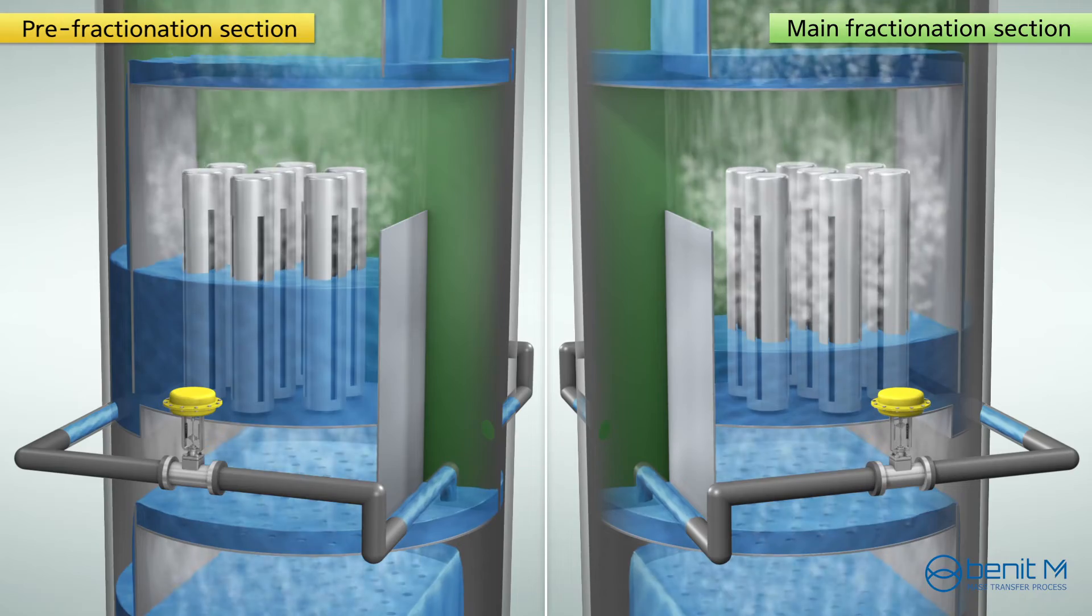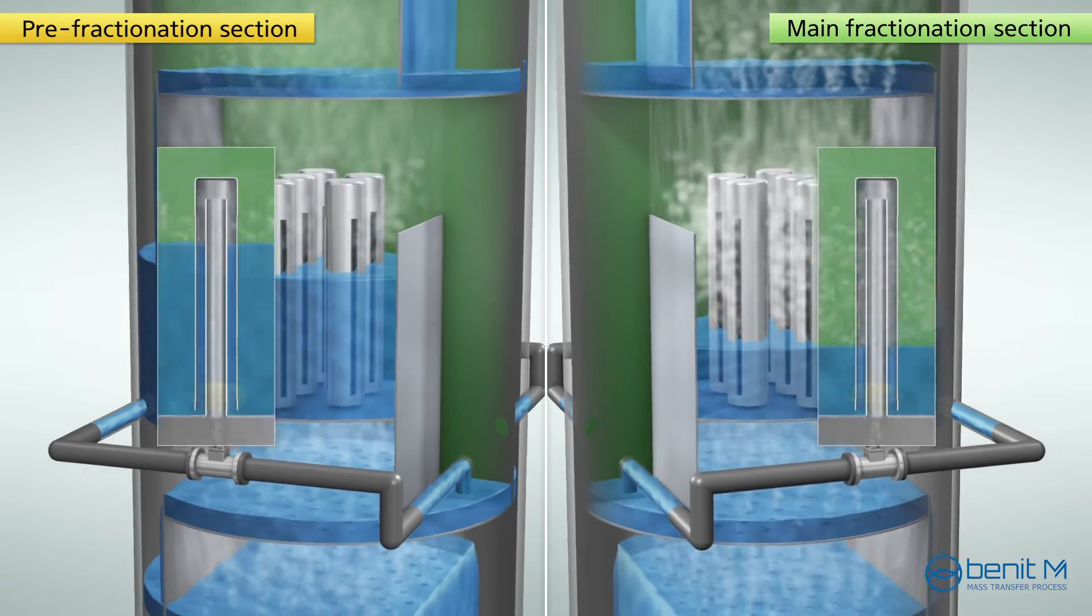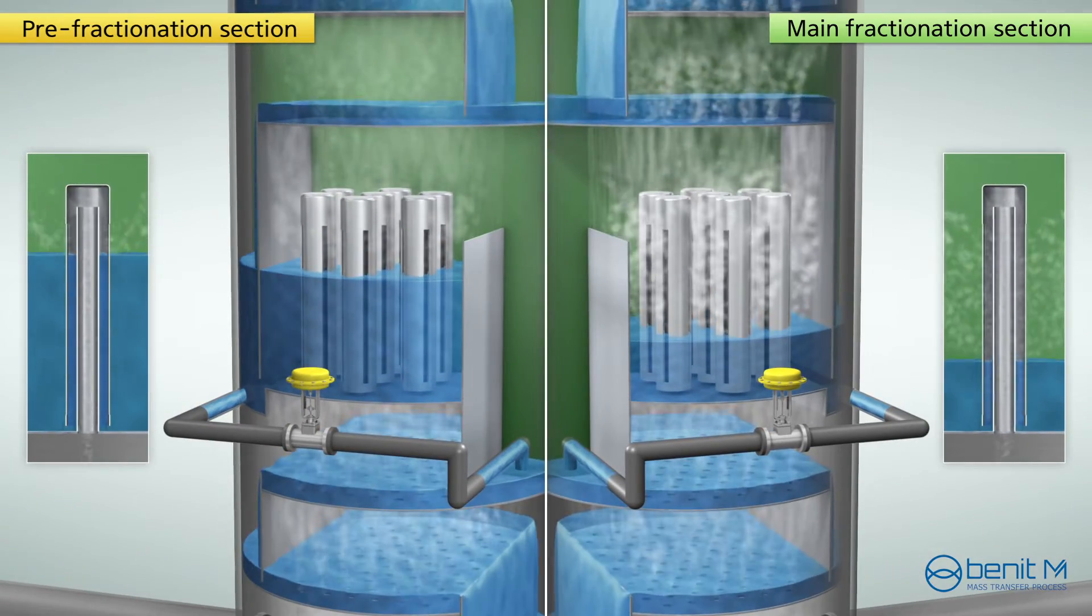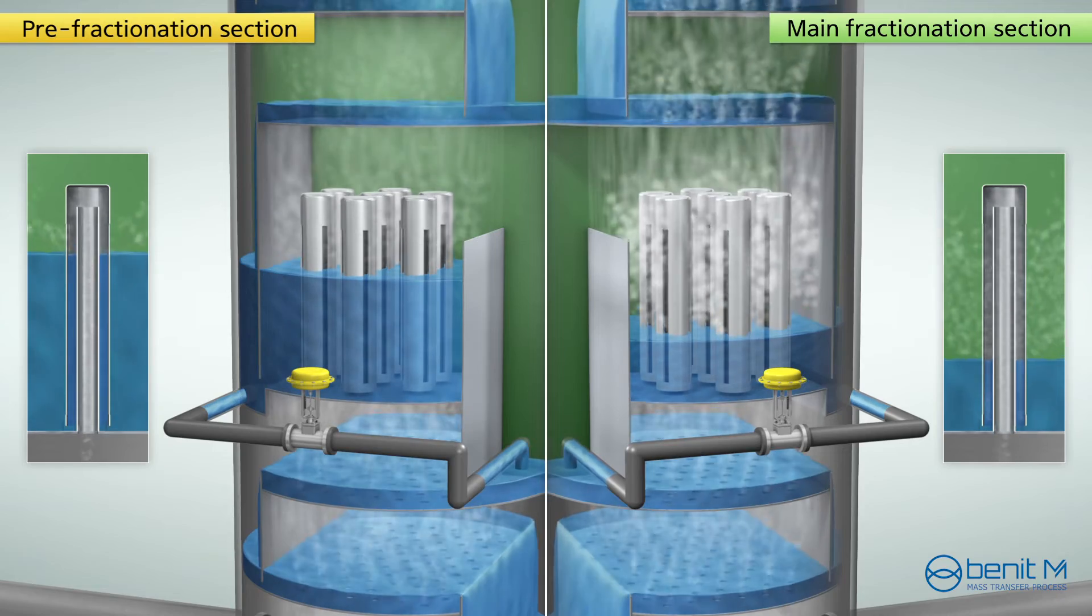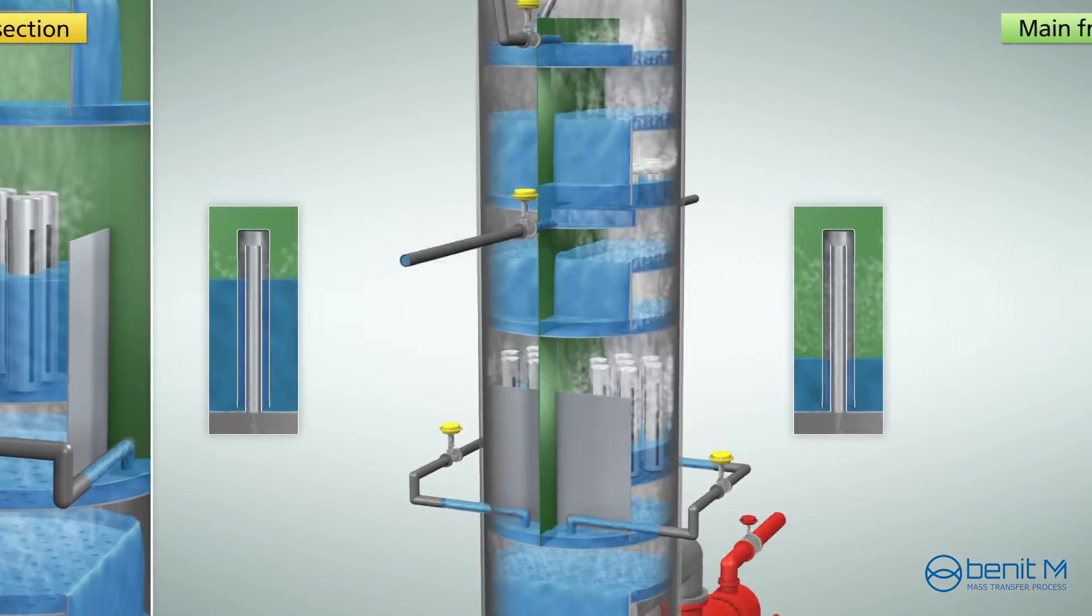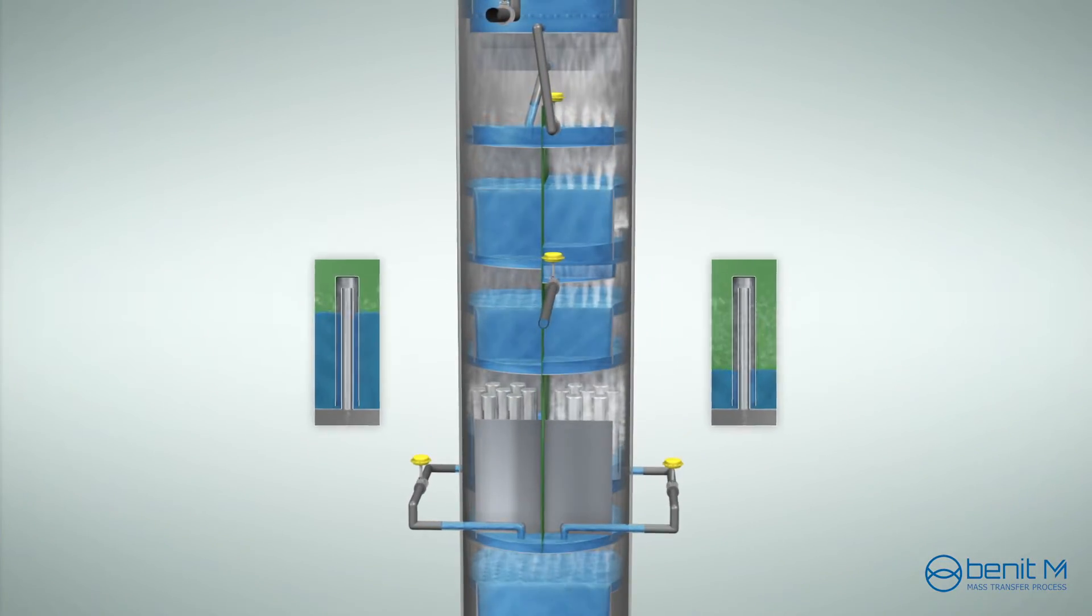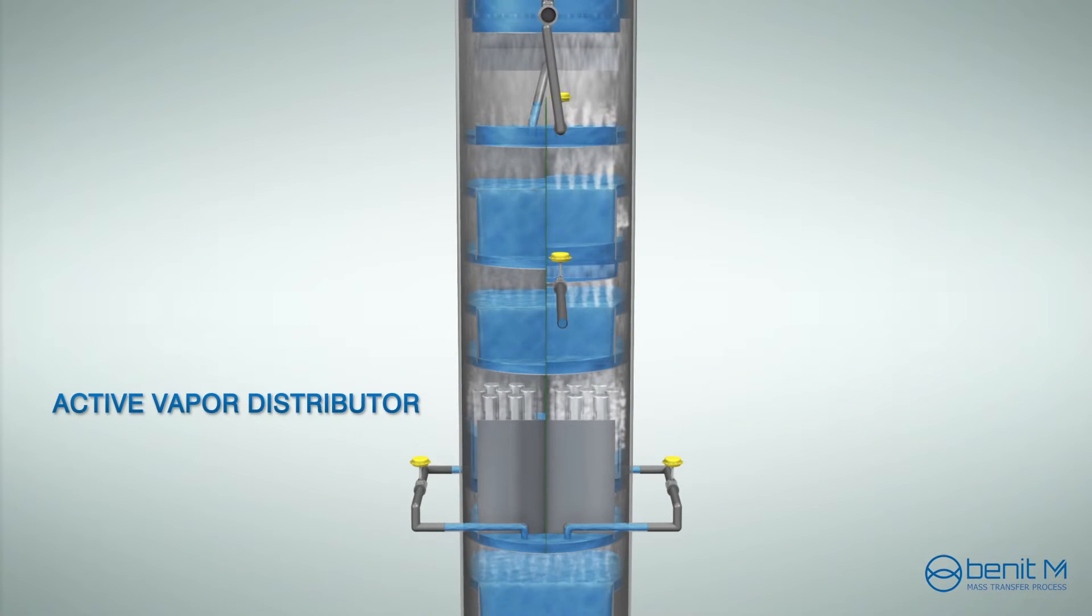With this manner, the vapor split ratio control can be accomplished intentionally just by adjusting the liquid level on the chimney tray. That's why we call this chimney tray the active vapor distributor.